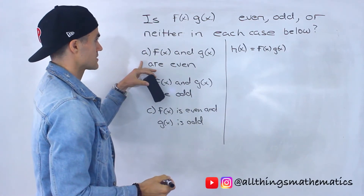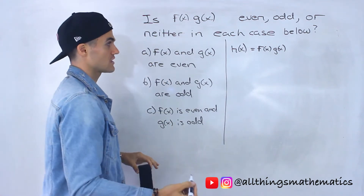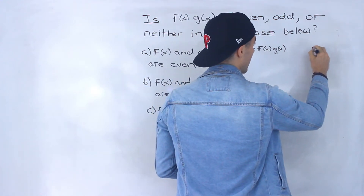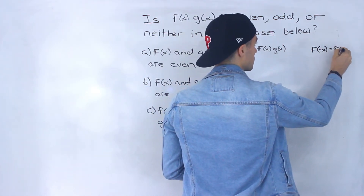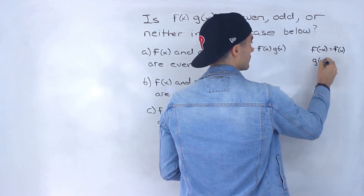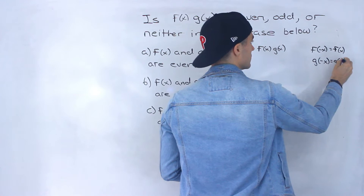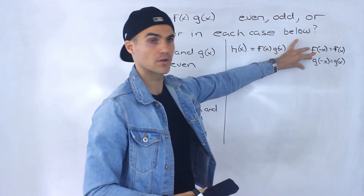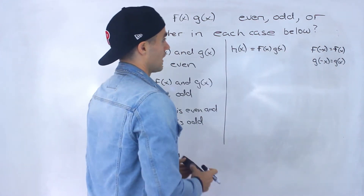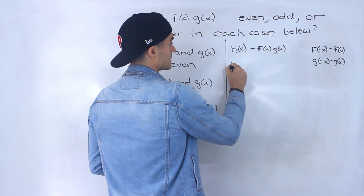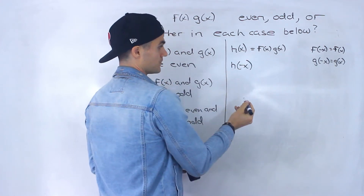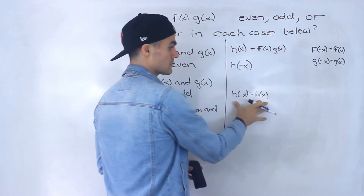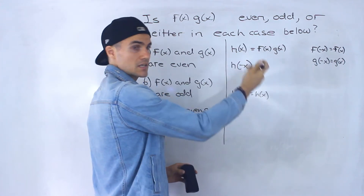In this first case we're told f(x) and g(x) are both even. If f(x) is even and g(x) is even, that means f(-x) = f(x) and g(-x) = g(x). Both of them have that property. Now we need to figure out what h(-x) is going to be. If we can get h(-x) equal to h(x), we know the function is even.